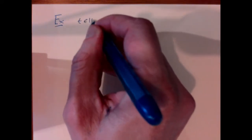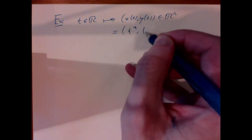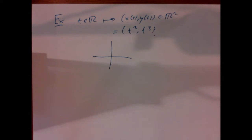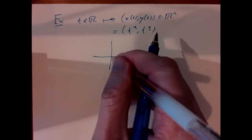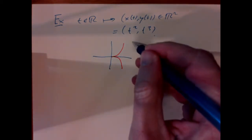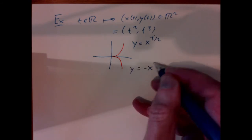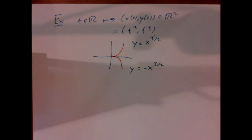We start by asking when a map is actually going to be an embedding. A very simple example is the map that takes a real number t to a point of the plane, x(t), y(t), given by t squared and t cubed. Looking at the image of this map, it's given by a shape with a sharp cusp. This part is the graph of y equals x to the 3/2, and y equals minus x to the 3/2, and they meet in a manner that's obviously not a submanifold.